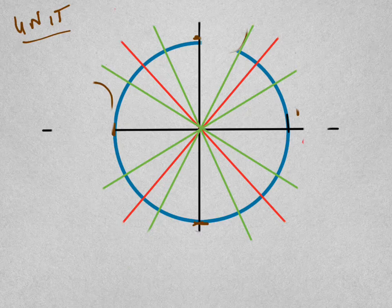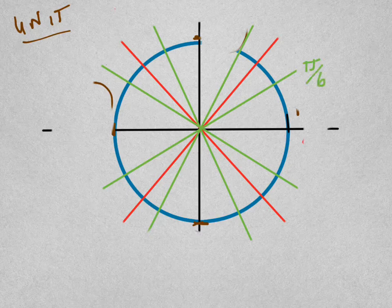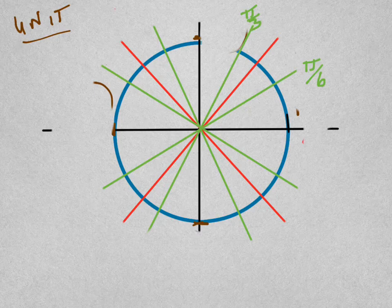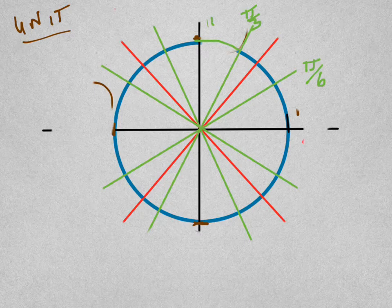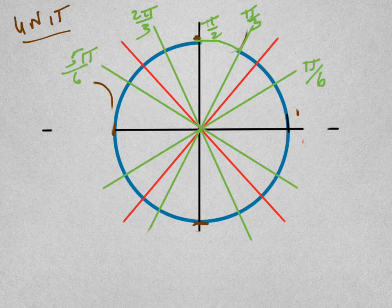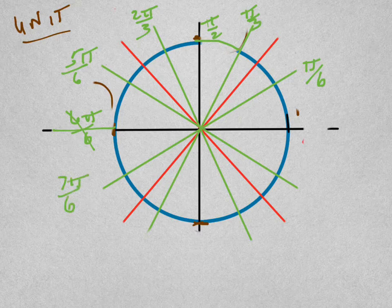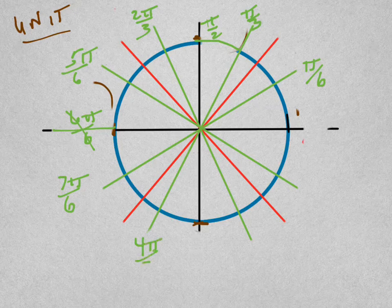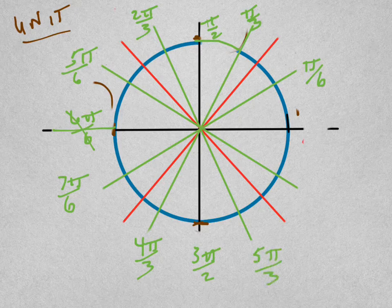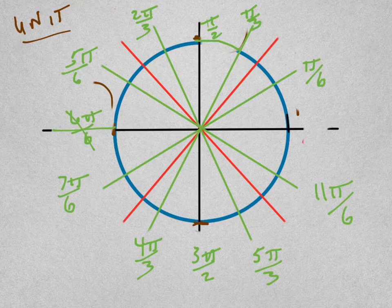Let's do the green now. This is one-sixth of pi, this is two-sixths of pi which I'm going to reduce, the same as one-third. This is three-sixths of pi up here which is the same as one-half. This is four-sixths, I'm reducing it, two-thirds. This is five-sixths of pi, this is six-sixths of pi which is just one pi, this is seven-sixths of pi, this is eight-sixths of pi, I'm reducing it to four-thirds, this is nine-sixths of pi, this is ten-sixths of pi, this is eleven-sixths of pi.